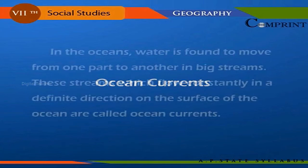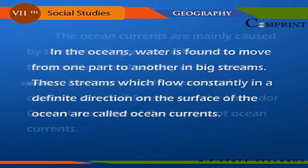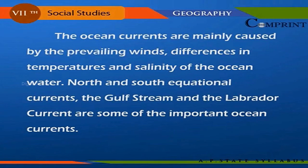In the oceans, water moves from one part to another in big streams. These streams, which flow constantly in a definite direction on the surface of the ocean, are called ocean currents. Ocean currents are mainly caused by prevailing winds, differences in temperature, and differences in salinity of the ocean water. The North and South Equatorial Currents, the Gulf Stream, and the Labrador Current are some important ocean currents.